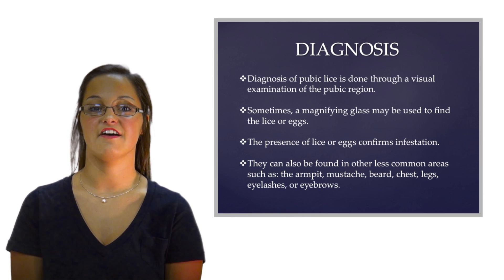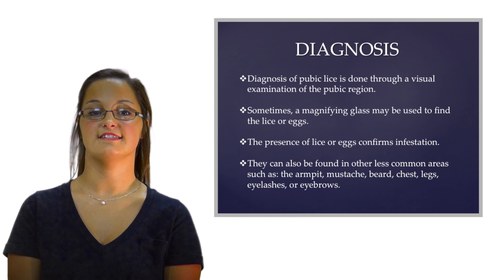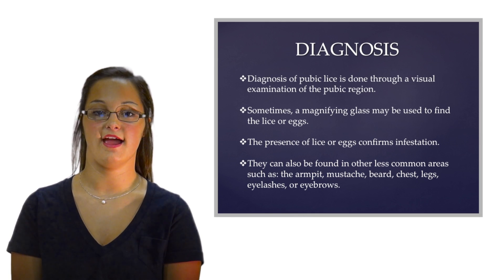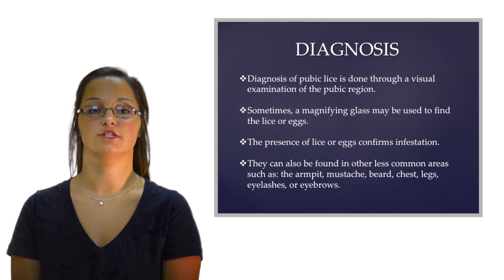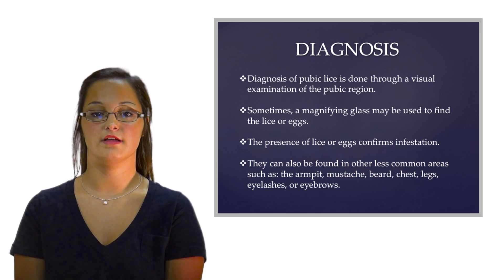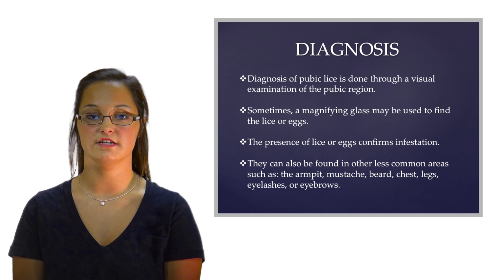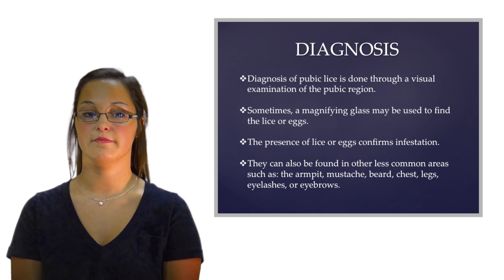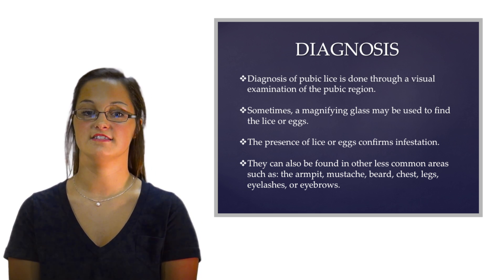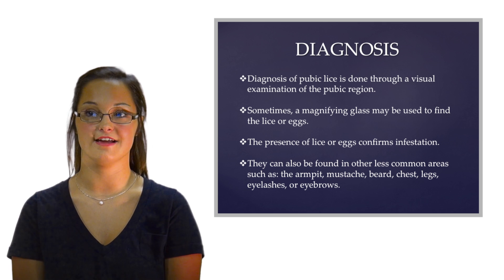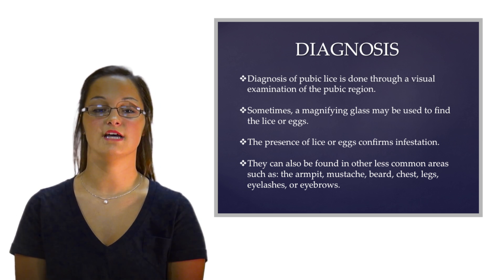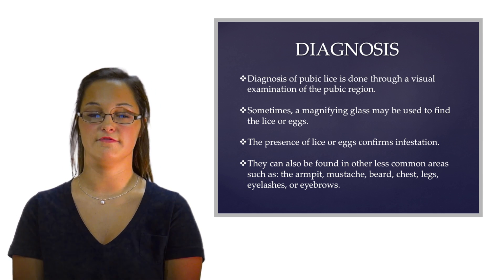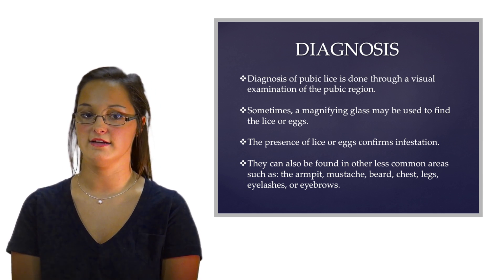Diagnosis of pubic lice is done by finding lice or eggs in the hair of the pubic region. They can also be found in other less common areas such as the armpit, the mustache, the beard, the chest, the legs, the eyelashes, or the eyebrows. Sometimes a magnifying glass may be used to find the lice or eggs.